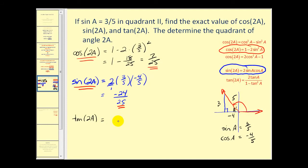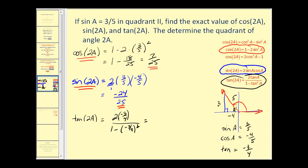Lastly, let's find tangent two A. Looking at our formula, we need to find the tangent of angle A first. From the reference triangle, tangent of angle A is opposite over adjacent, or three over negative four, so tangent A equals negative three fourths. We'll have two times negative three fourths over one minus negative three fourths squared. The numerator simplifies to negative three halves, and the denominator is one minus nine sixteenths, which is seven sixteenths.